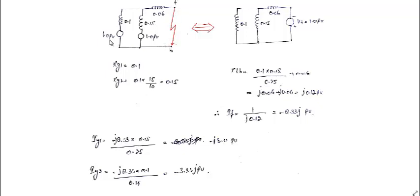With no current flowing before the fault, the voltage at the fault point equals the source voltage — 1.0 per unit. Connect Vt = 1.0 per unit at fault point F with negative to F and positive to N. Calculate Xth: parallel combination of 0.1 and 0.15 gives 0.06, plus transformer reactance 0.06, giving total Xth = 0.12 per unit. Fault current If = Vt/Xth = 1/j0.12 = minus j8.33 per unit.